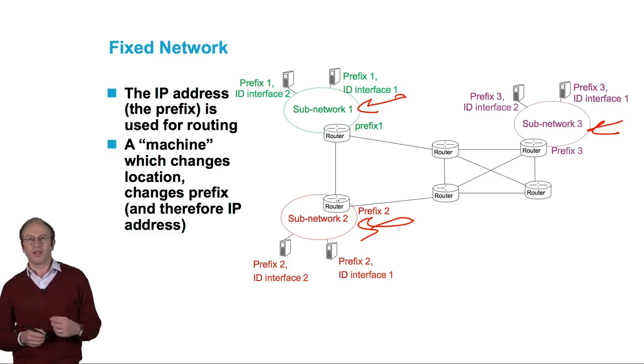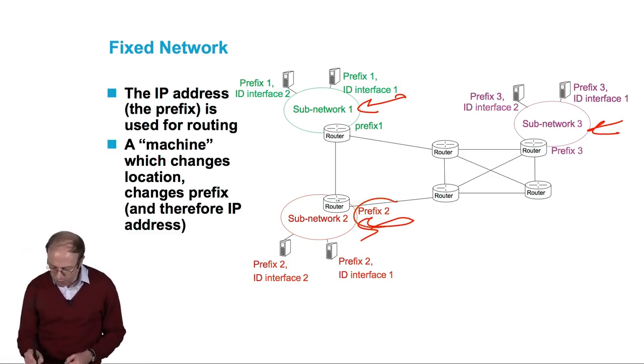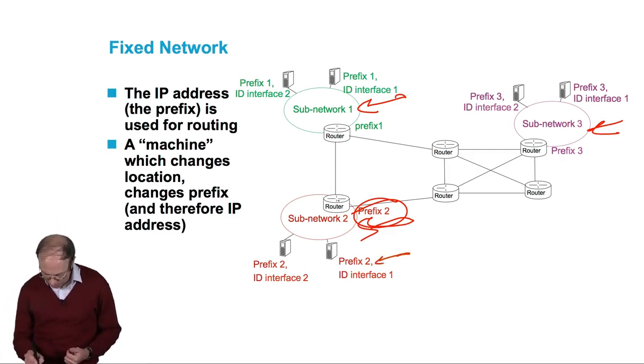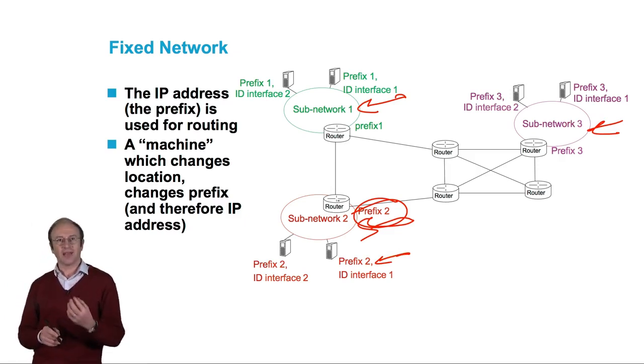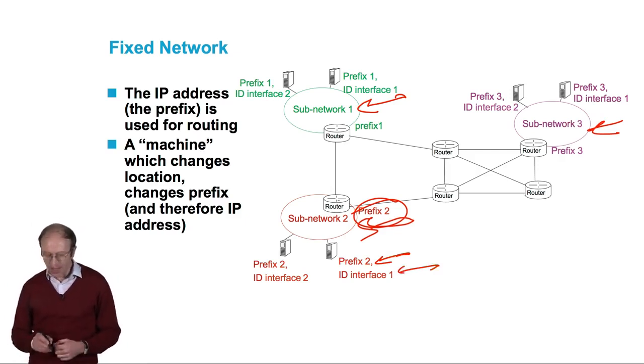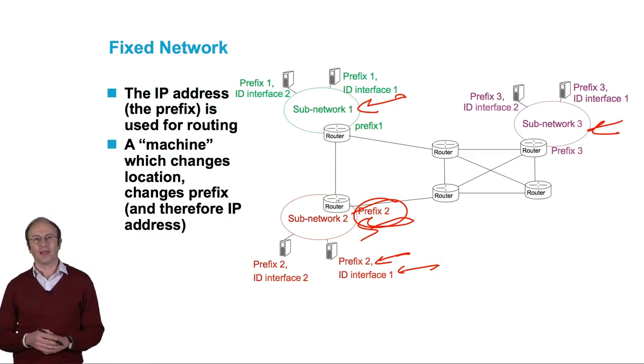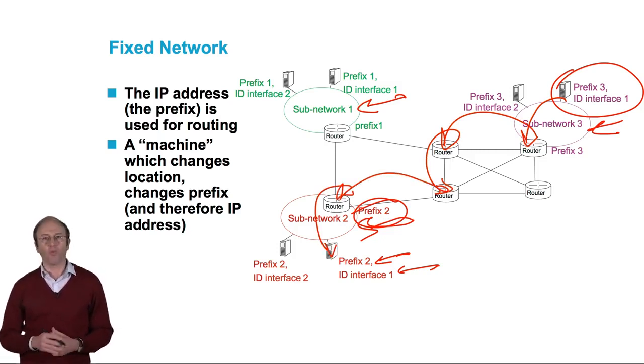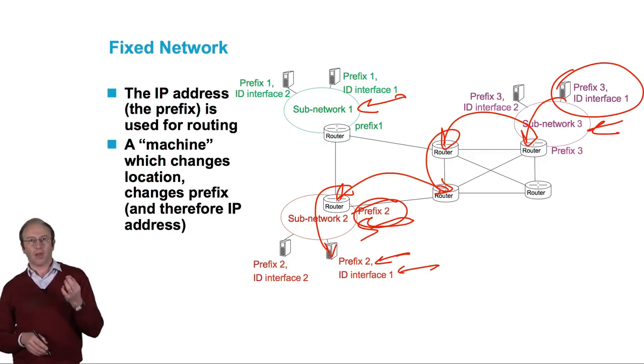A subnetwork is characterized by a prefix. Each machine is necessarily on a subnetwork, and its address is composed of a prefix which is specific to that subnetwork and an interface identifier or ID. Each IP packet that is transferred from one machine to another has both a source address and a destination address.